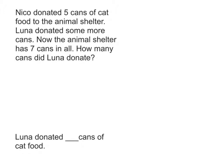So let's read it again. Nico donated five cans of cat food to the animal shelter. Luna donated some more. Now the animal shelter has seven.